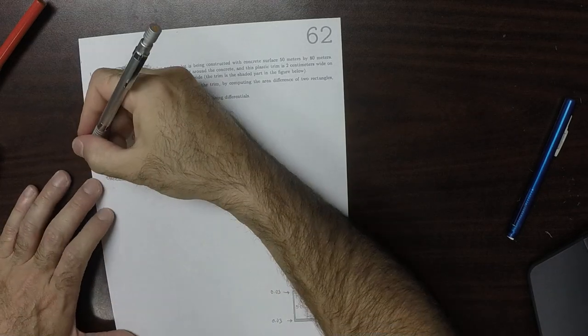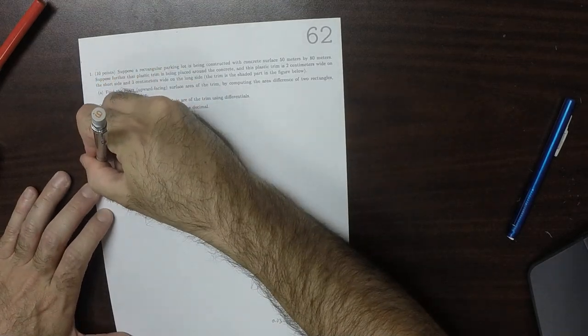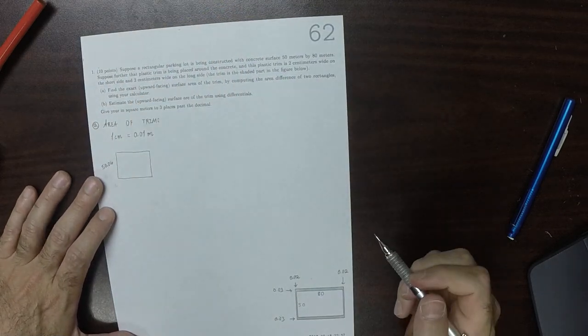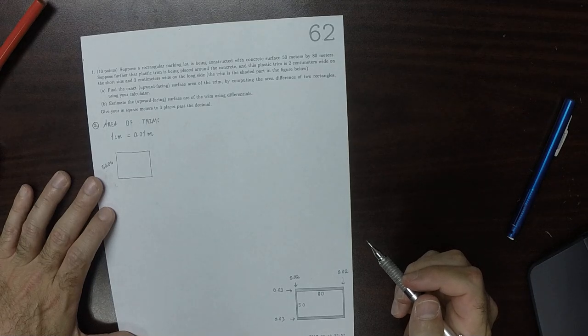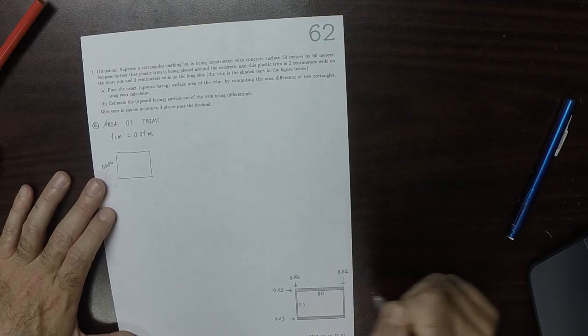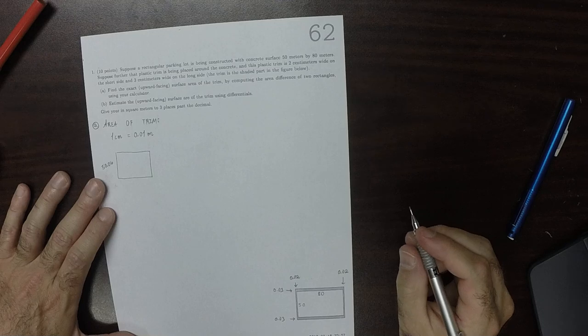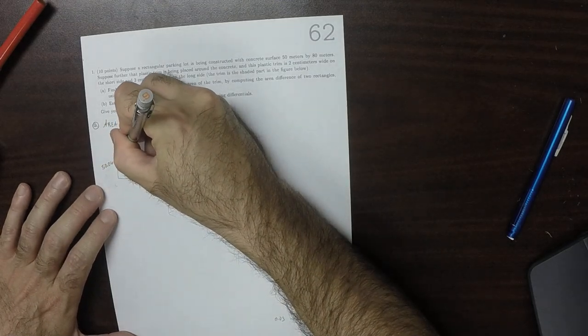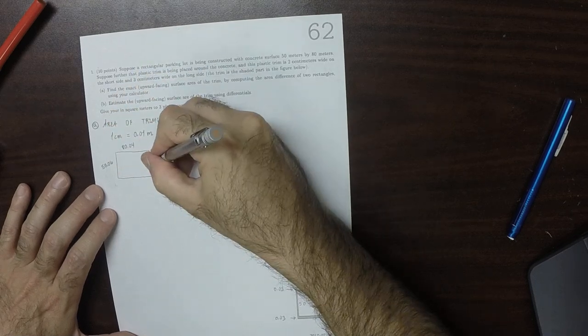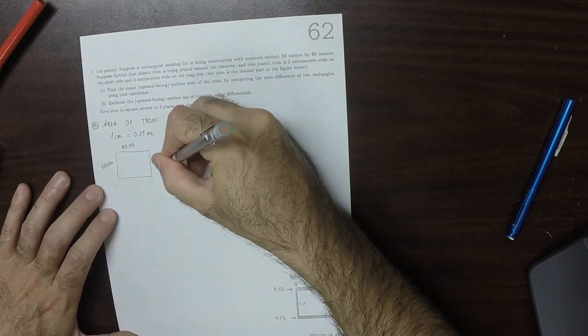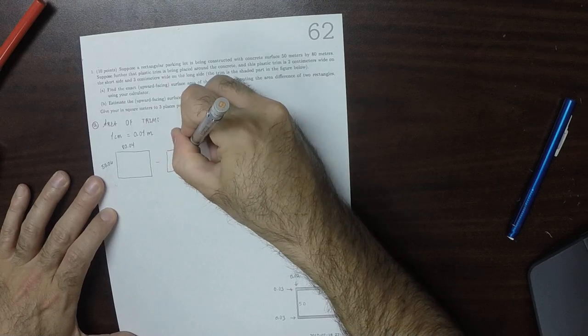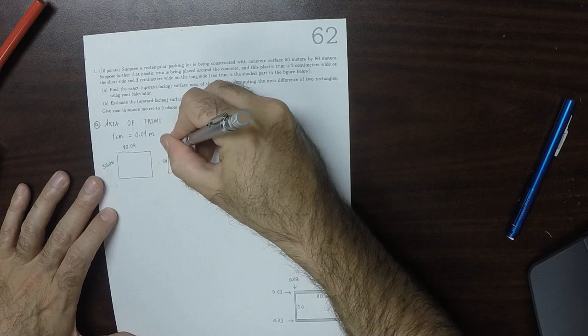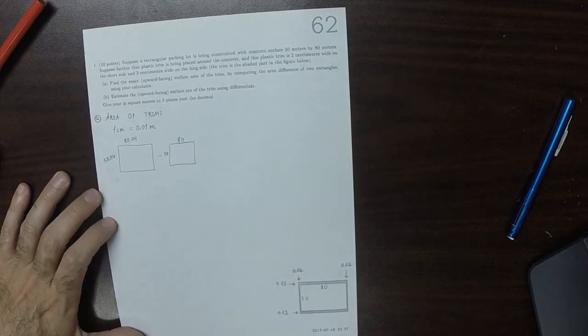So that means that this long measurement is 50.06, or this short measurement is 50.06. And the long measurement is 80.04. And we're going to subtract from that a slightly smaller rectangle that's 50 on that side and 80 on that side.